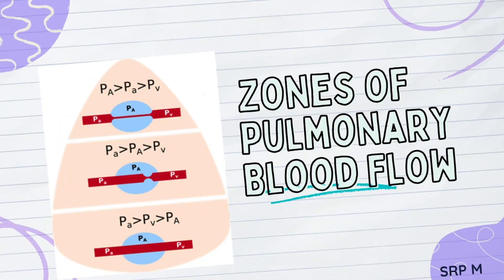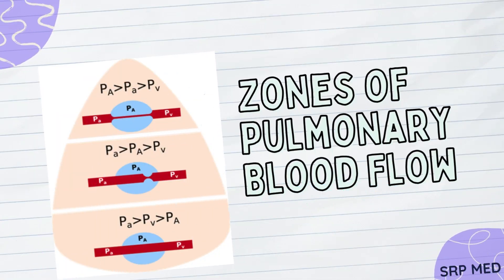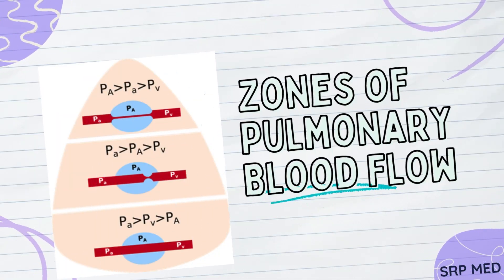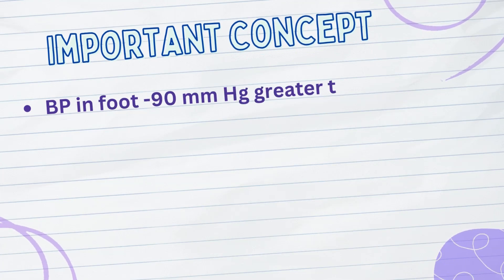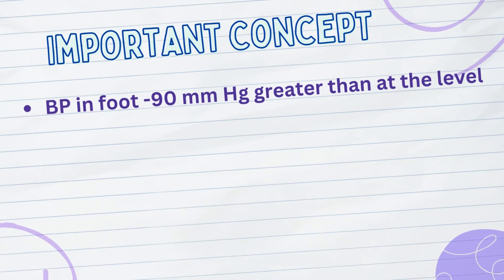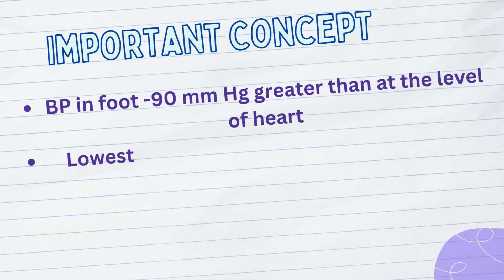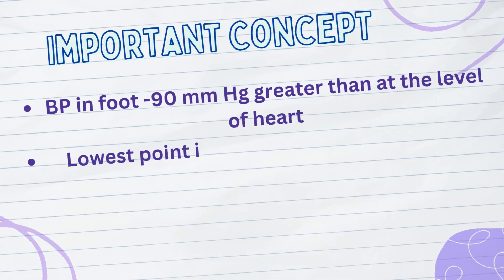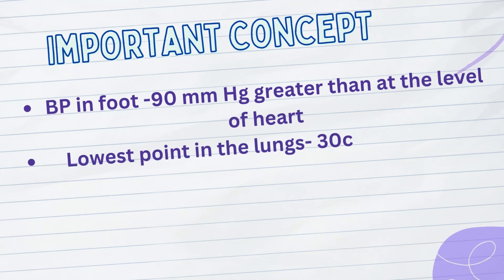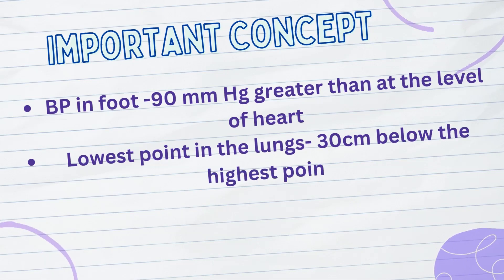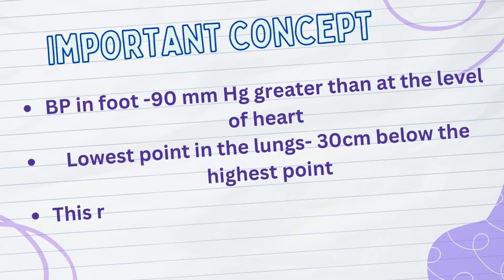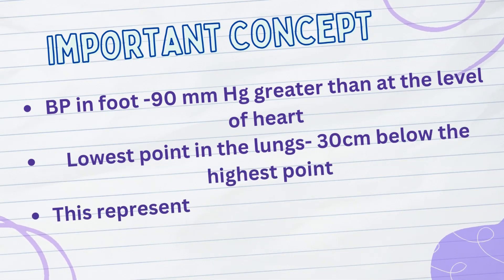In this informative video we will explore the zones of pulmonary blood flow. The blood pressure in the foot of a standing person can be as much as 90 mm of mercury greater than the pressure at the level of the heart. This is caused by hydrostatic pressure, that is, by the weight of the blood itself in the blood vessels. The same effect, but to a lesser degree, occurs in the lungs.